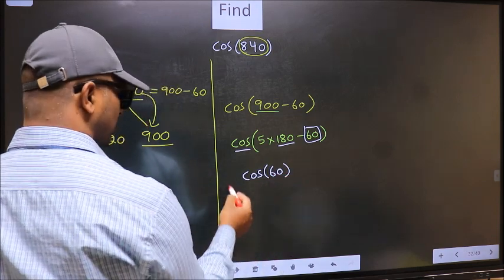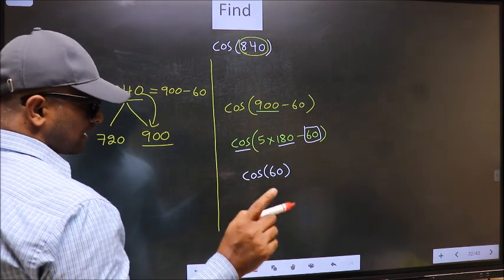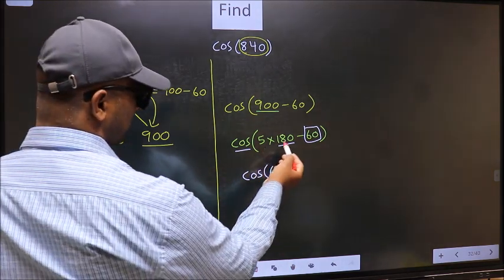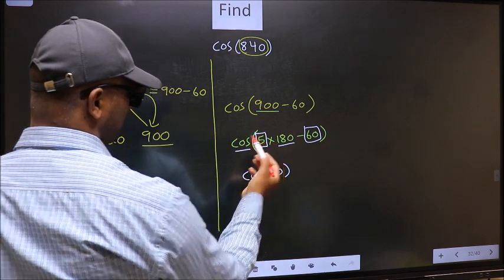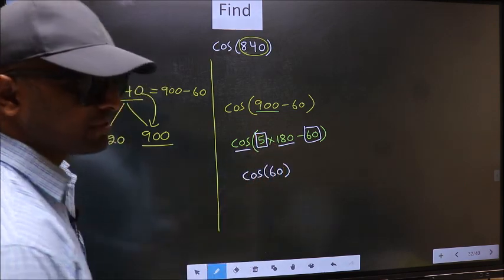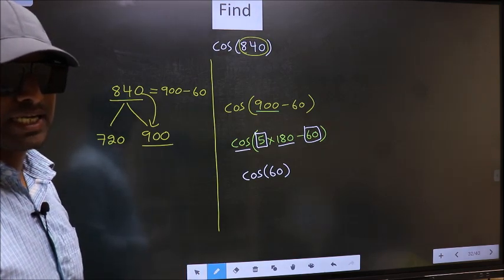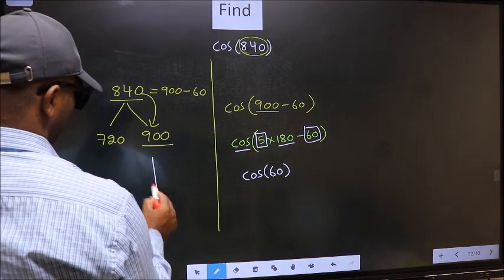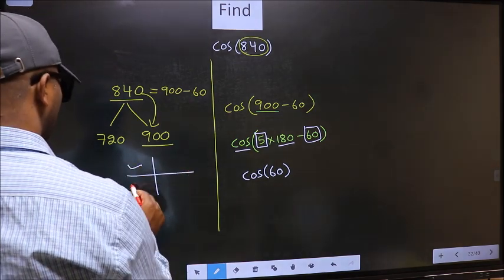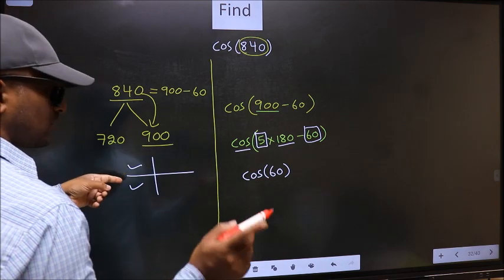Now the question is, will we get plus or minus? To answer that, we should look at the number before 180. That is 5, and 5 is odd. All the odd multiples of 180 lie in either the second or the third quadrant.